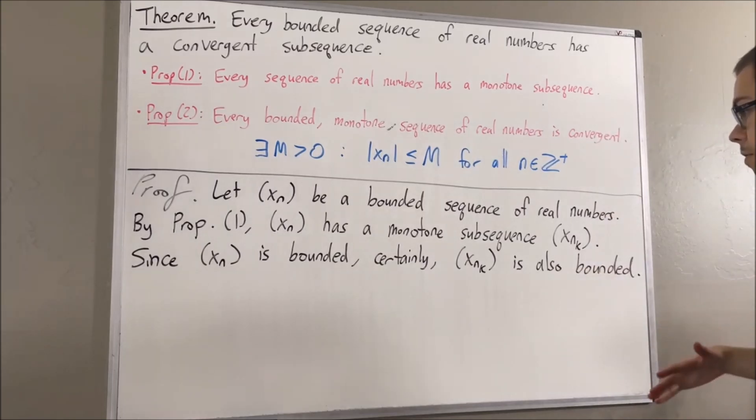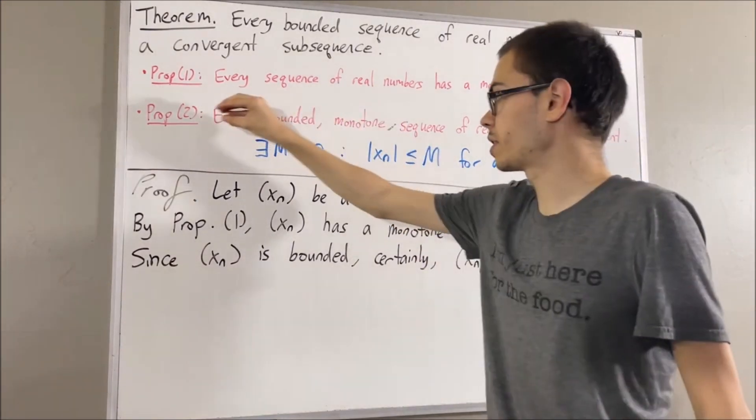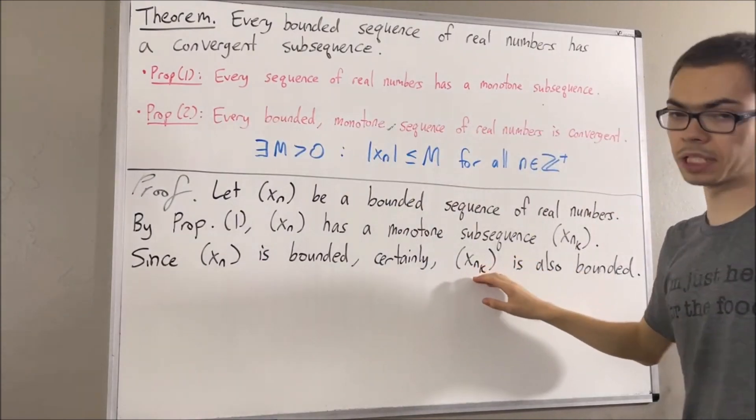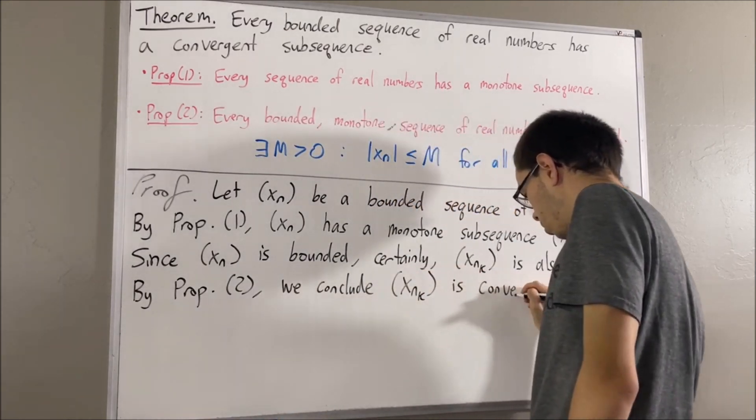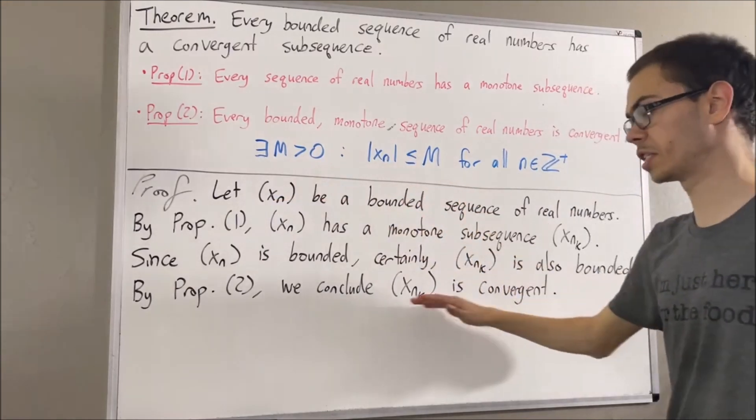And now we see that xnk is a bounded monotone sequence of real numbers. By our second preliminary result, this implies that xnk must be convergent. And therefore, xn has a convergent subsequence.